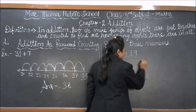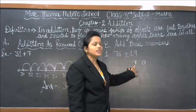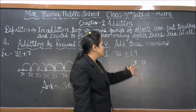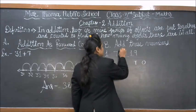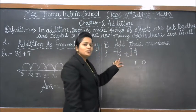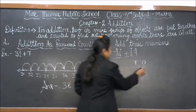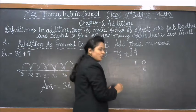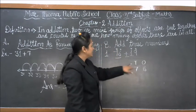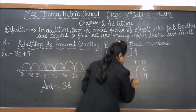We make a place value chart with ones and tens. In the previous class we already discussed the place value chart. We arrange all numbers according to this chart. This is the ones place and this is the tens place. In the ones value we write 6, and in the tens value 7. The next number: ones value is 9, tens value is 1.